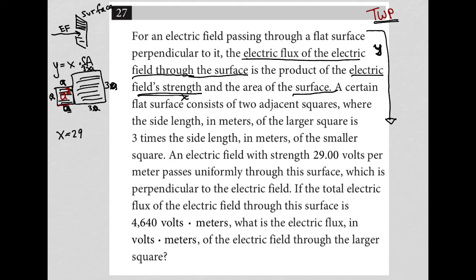Side times side. And the area of the large square will be 9A squared. Again, side times side. So the total surface area for those two squares side by side would be 10A squared.